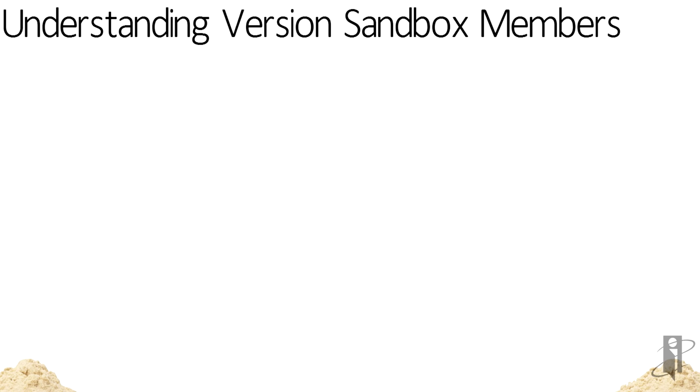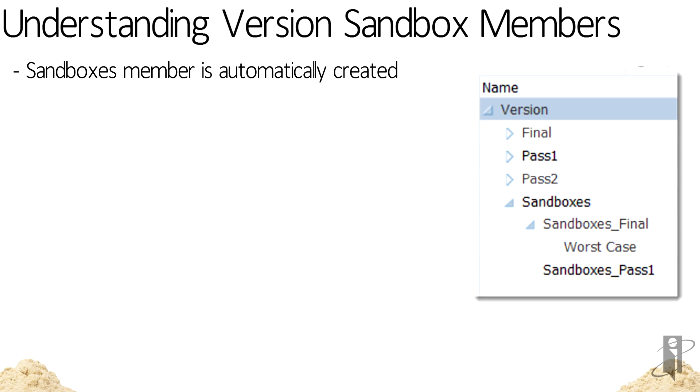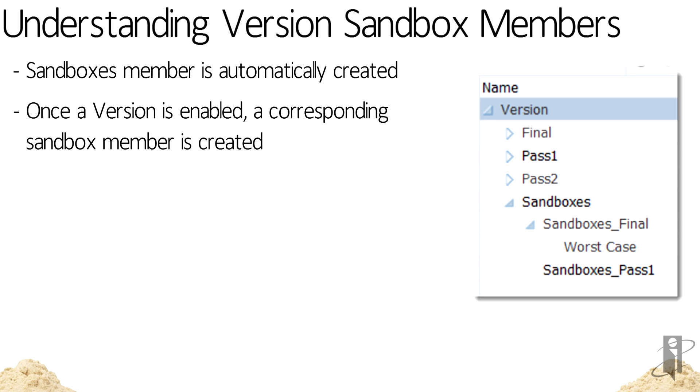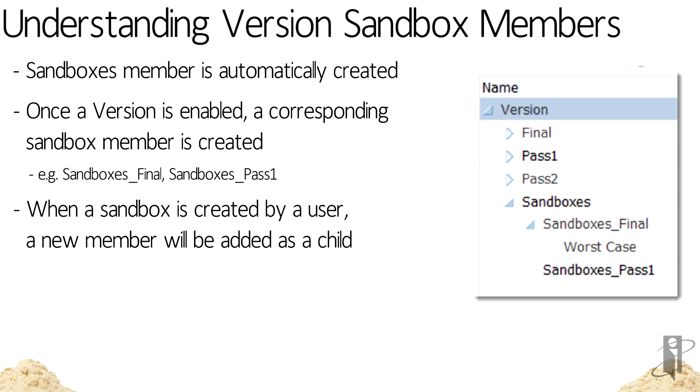A Sandboxes member will be created automatically in the version dimension. Once you've enabled sandboxes for a version, a corresponding sandbox member is created for that version. For example, if the Final and Past One versions are enabled for sandboxing, Sandboxes Final and Sandboxes Past One will be created. When a sandbox is created by a user, a new member will be added as a child of the sandbox version member. For example, if a user creates a sandbox called Worst Case in the Final version, it will be added under Sandboxes Final.